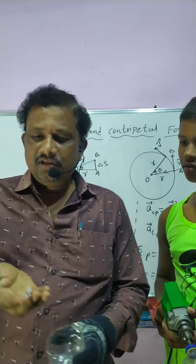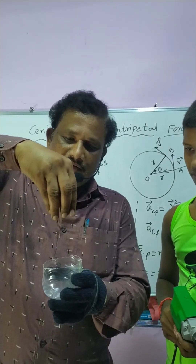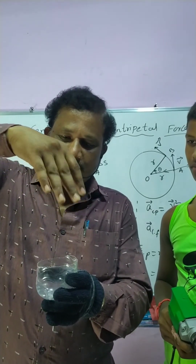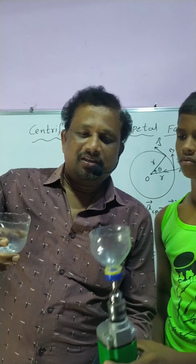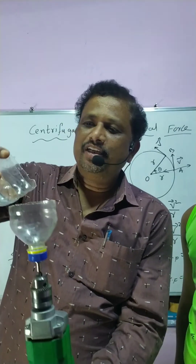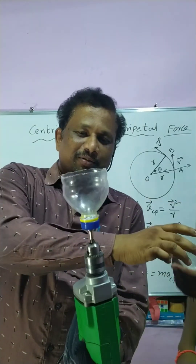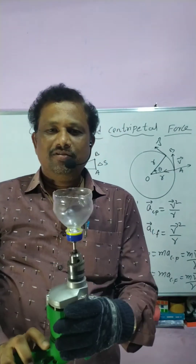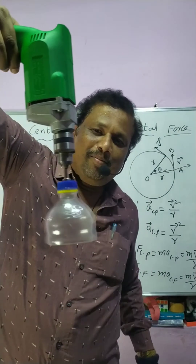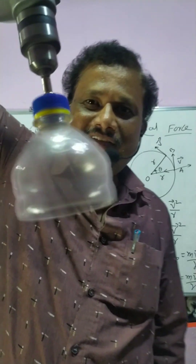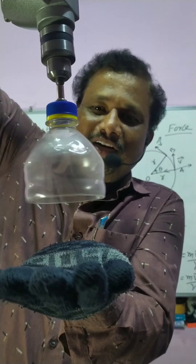Dear students, these are paper balls. If you simply leave them, they will fall down due to gravitational force. Now I am taking a drilling machine with a waste bottle arrangement and keeping all these paper balls in it. Carefully observe — when it rotates, the balls cannot fall down. If I stop the rotation, they will fall.